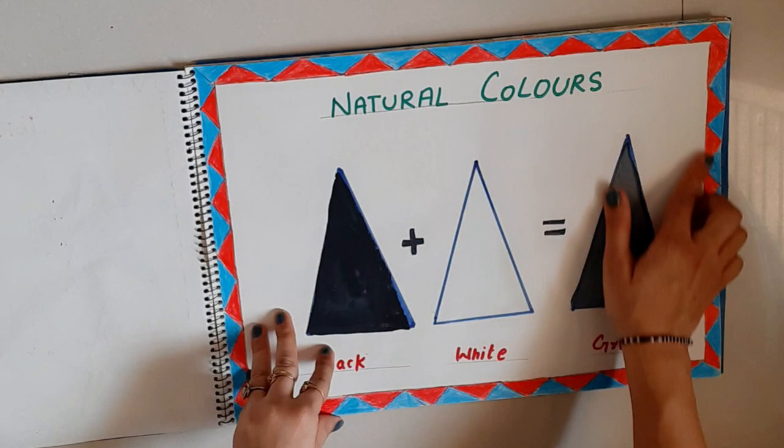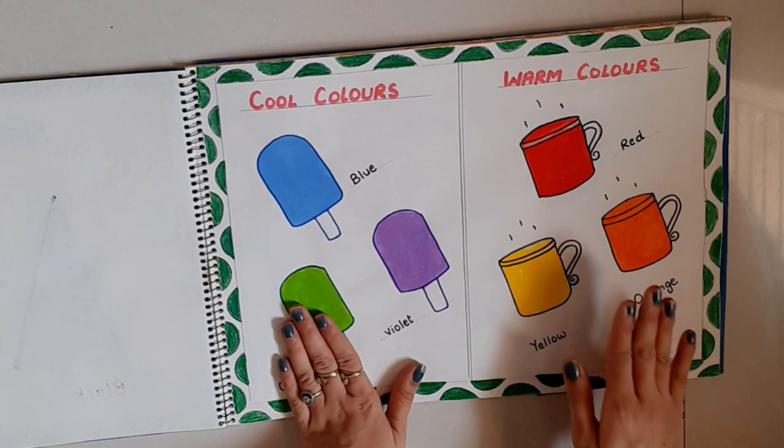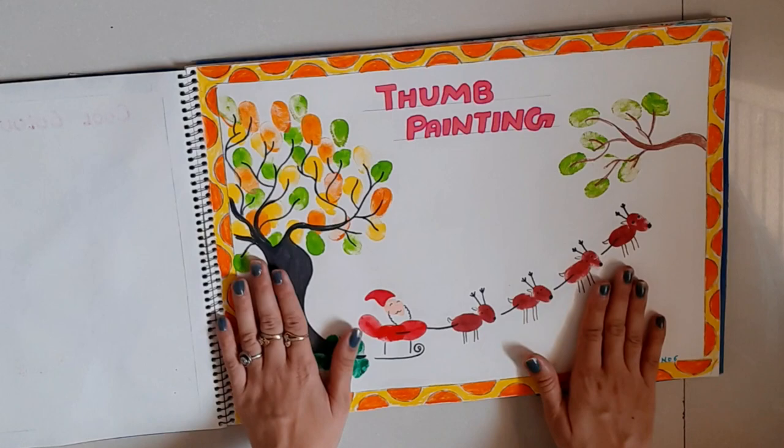Next, natural colors: the two natural colors are black and white, and also gray. Then natural colors, cool colors, and warm colors — you can make them on different pages. These are cool colors and warm colors.